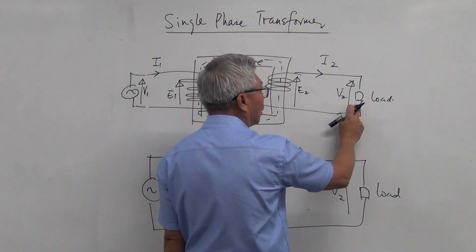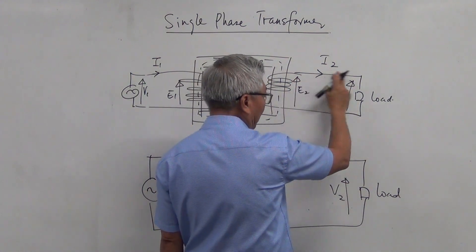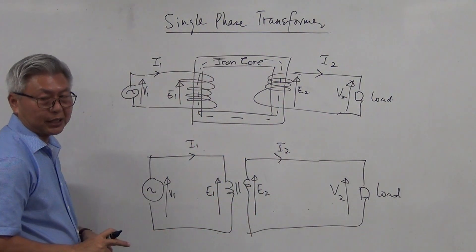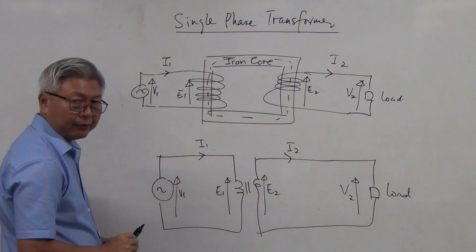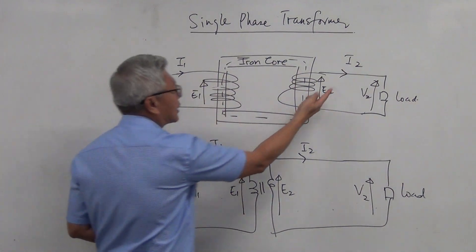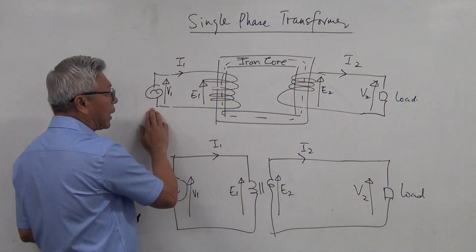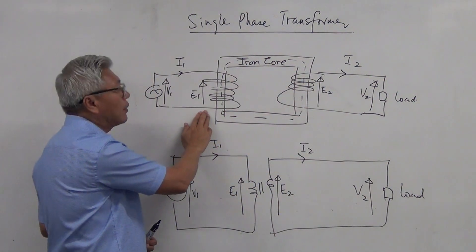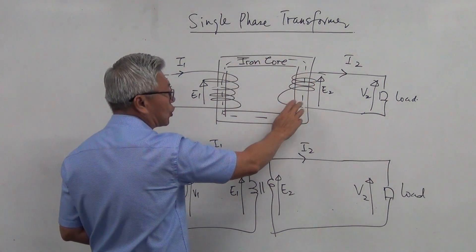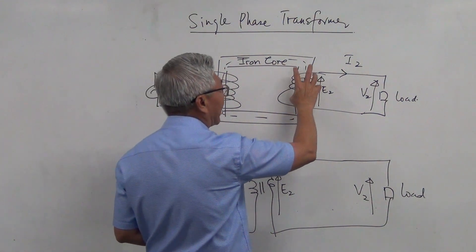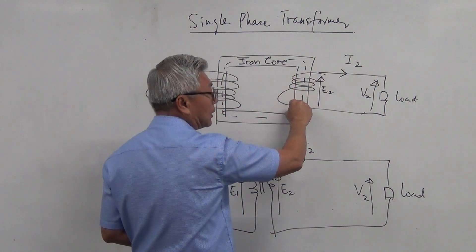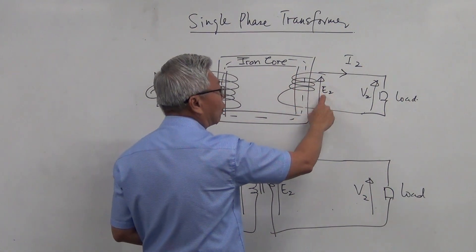If my circuit is closed with a load, then I will have a current called secondary current, and primary current is on the primary side. Let's recap: what makes a transformer? You need a primary coil and a secondary coil. Power supply is connected to the primary coil, and the magnetic flux generated goes through the iron core, captured by the iron core to reach the secondary. The moving magnetic flux cuts the conductor in the secondary coil, and therefore voltage is induced.